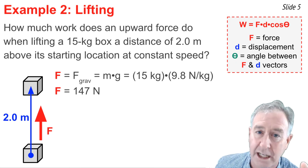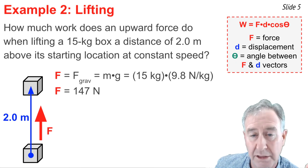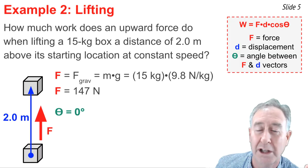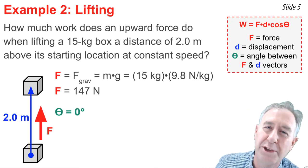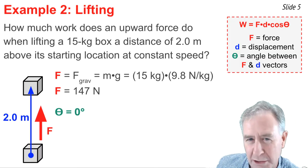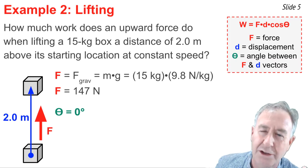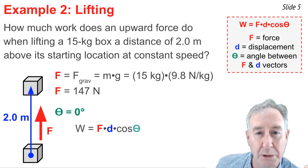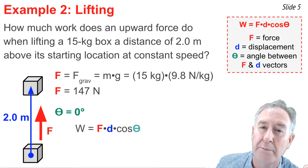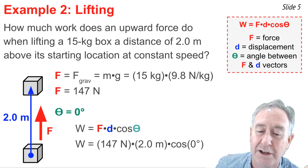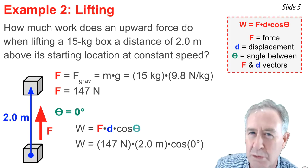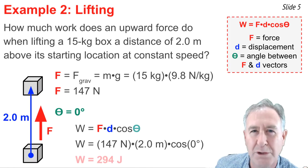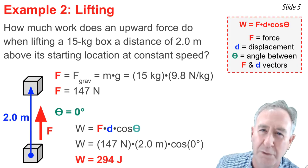Now I know F and D. The angle theta is simply the angle between the force vector and the displacement vector. When they go in the same direction, that angle is 0 degrees. Using the work equation: 147 newtons times 2 meters times the cosine of 0 degrees — the cosine of 0 is 1 — gives a work value of 294 joules.